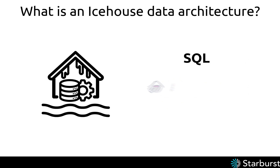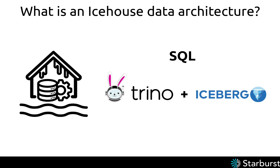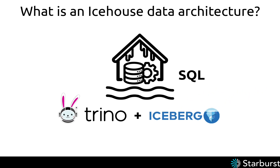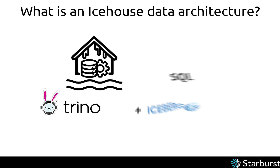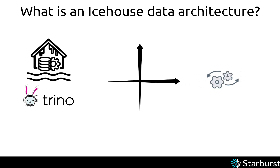How does it do this? Ice house architecture achieves this by uniting two of the most innovative technologies of our time: Trino and Apache Iceberg. You can think of this as the heart of the ice house architecture, and this union defines the ice house as we know it. Let's look at these two components one by one. Trino's main value is scale and speed.